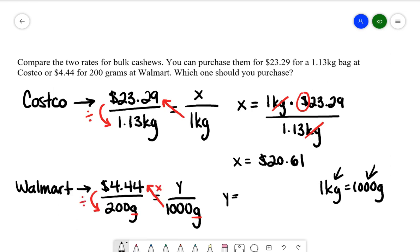Let's plug that in. What I get is $22.20. When I compare these two prices, I'm going to be paying significantly less at Costco. So therefore, what would be a good idea is if we went to Costco and purchased the cashews.